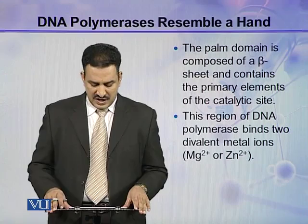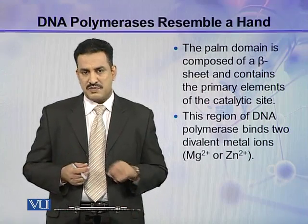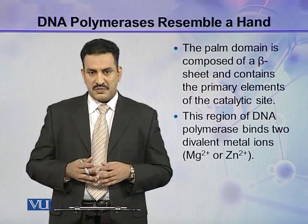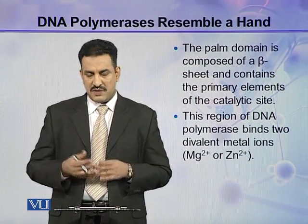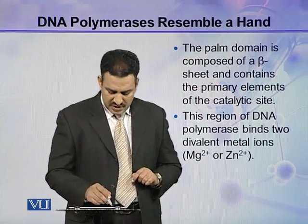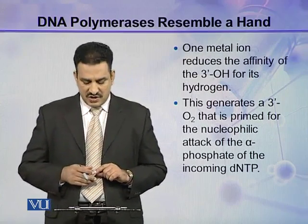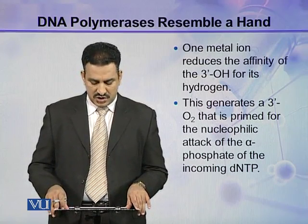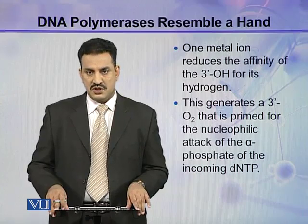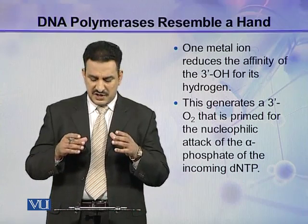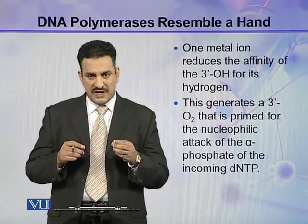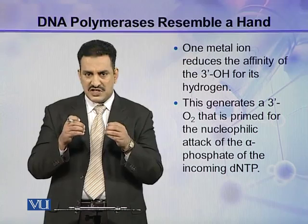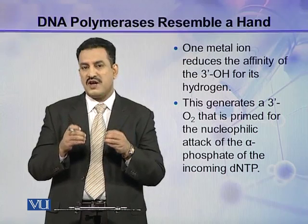This region of DNA polymerase binds two divalent metal ions — either magnesium or zinc — present in the palm domain. One metal ion reduces the affinity of the three-prime hydroxyl for its hydrogen, meaning the affinity between oxygen and hydrogen at the three-prime end is reduced by one metal ion.